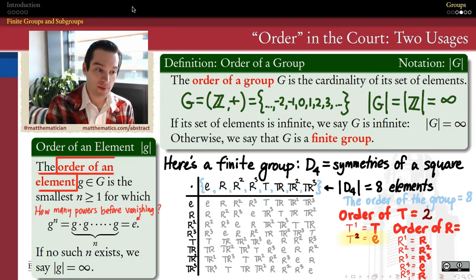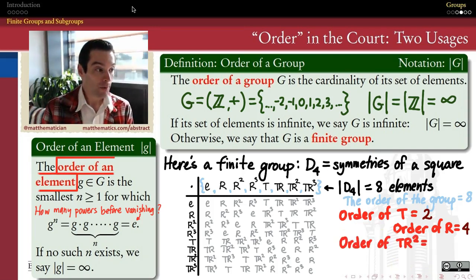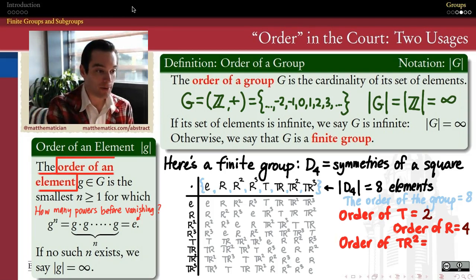And it might be a little bit less obvious, but let's do one more example here. What would the order of the element tr² in this group be? tr², what would we, how many times would we have to take a power of tr² before we get back to the identity?